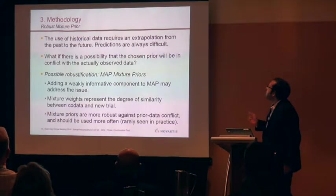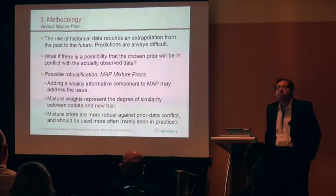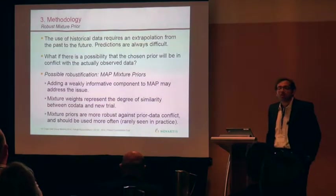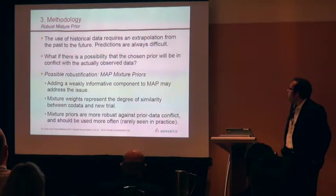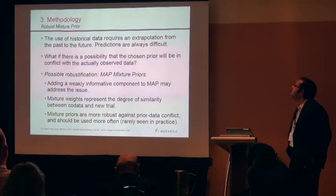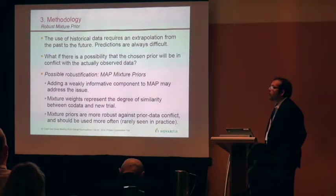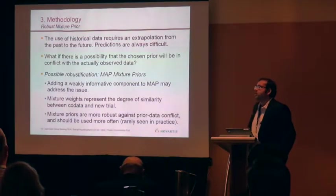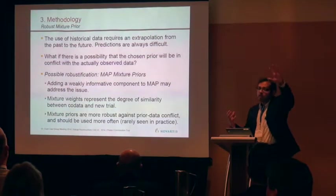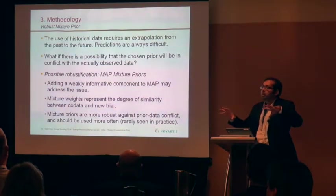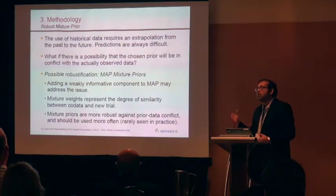There is always a discussion: did we choose the right prior? What if the prior was wrong? If you have prior-data conflict, your operating characteristics can suffer. We published work in Biometrics looking at the mixture prior approach. You have one component of the mixture coming from the historical data and another that is completely non-informative — this handles prior-data conflict well and improves operating characteristics.